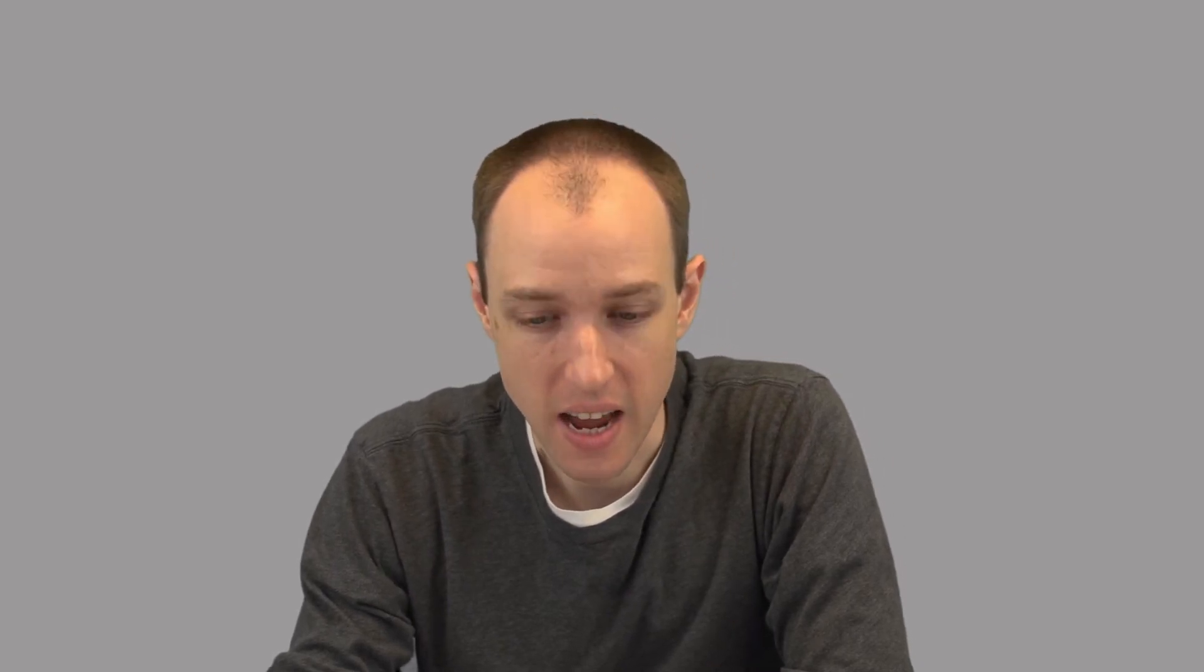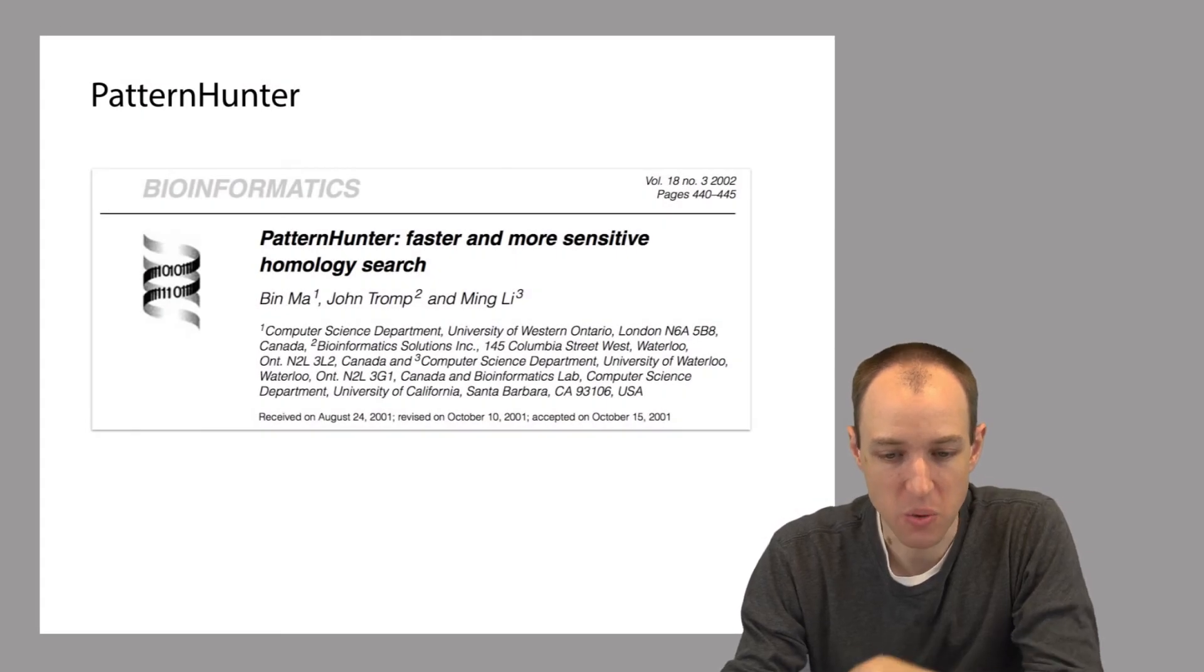We also discussed a variation on this idea, which we called a subsequence index, where we extract subsequences from the genome instead of substrings. So subsequences are not necessarily contiguous. So what we're extracting is this non-contiguous pattern out from the middle of the text T. This idea is also pretty widely used in practice. And as you'll explore in a programming assignment in this module, it has an important advantage over the substring indexes, which is basically that the index filter tends to be more specific. In other words, a larger fraction of the index hits actually lead to matches of the pattern P within the text T.